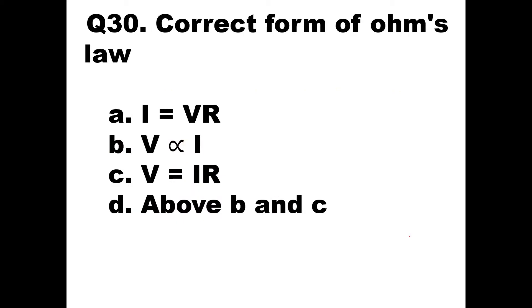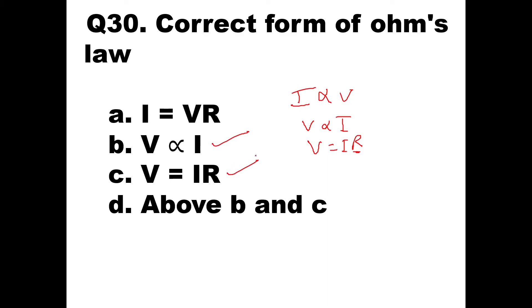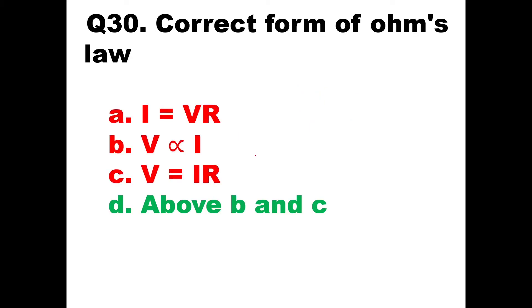Question number 30: the correct form of Ohm's law — the current flowing through the conductor is directly proportional to the voltage, so V is directly proportional to I, and V = IR where R is constant. Both statements B and C are correct. So the option is both B and C.